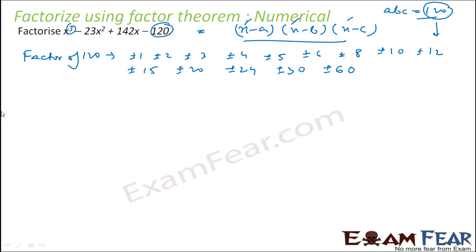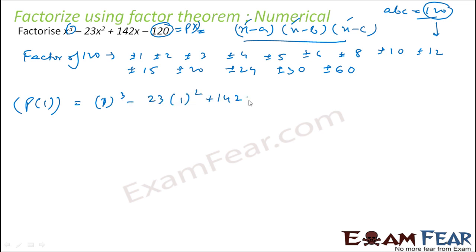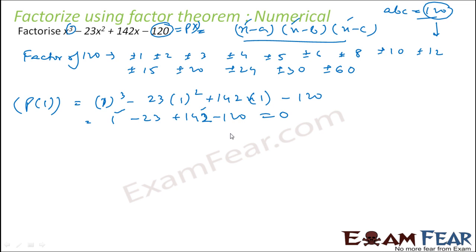But we haven't tried them yet. Let's try 1. We will try p(1). Assuming this polynomial is p(x), p(1) is: 1 cube minus 23 into 1 square plus 142 into 1 minus 120. This becomes 1 minus 23 plus 142 minus 120, which is 143 minus 143, that is 0. Since p(1) is 0, we can say that (x minus 1) is a factor.